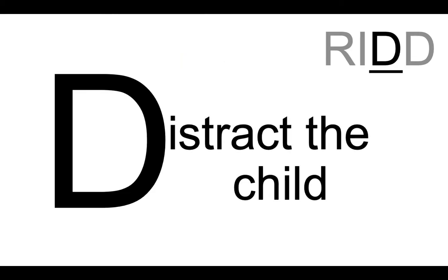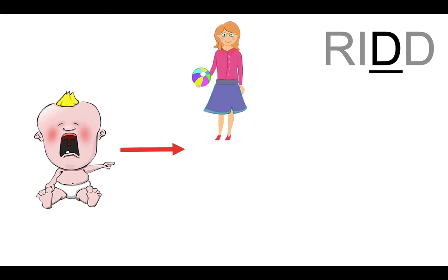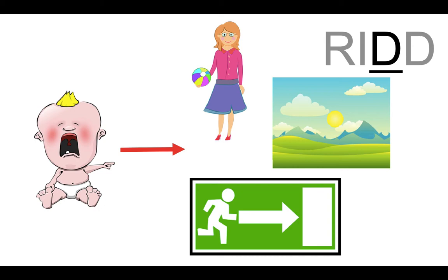Now to the letter D. Distract the child. A possibility is a change of activity, room, or scenery. For example, leaving the store might also be a good idea.